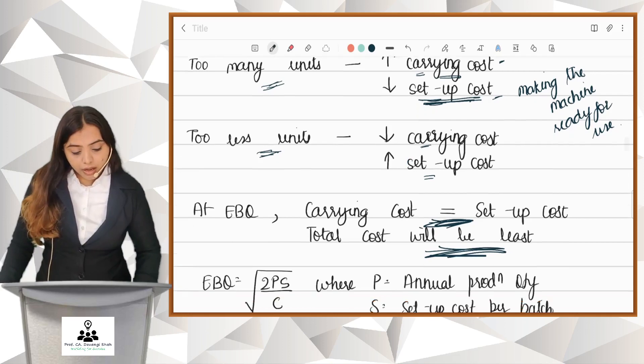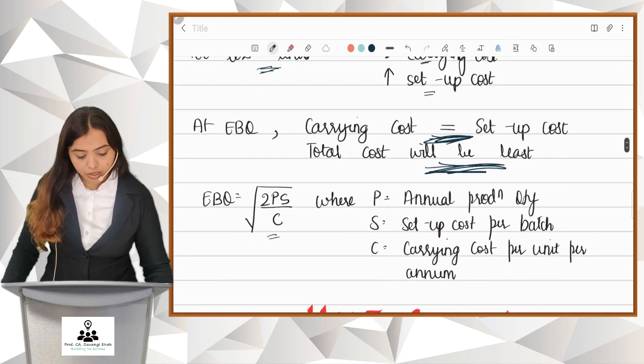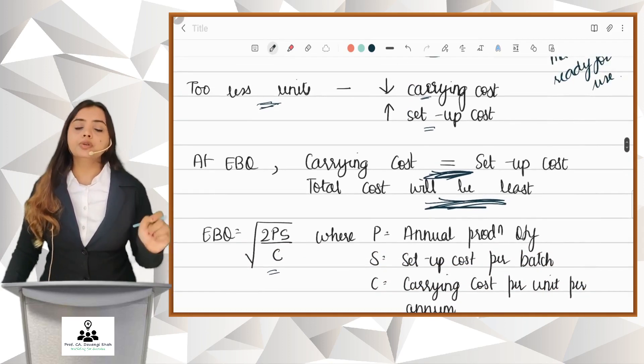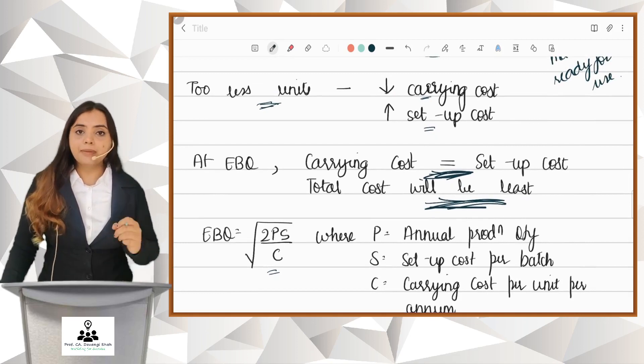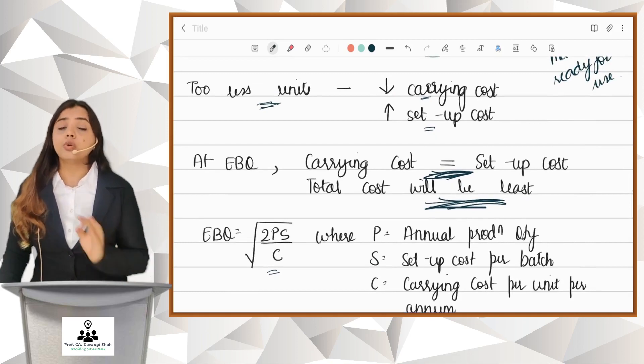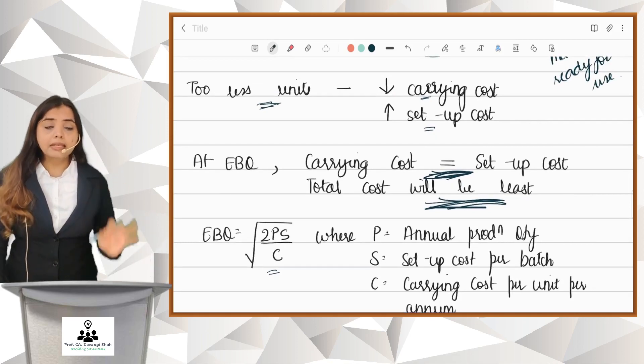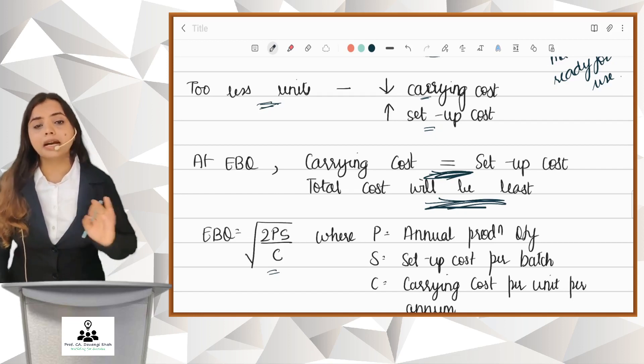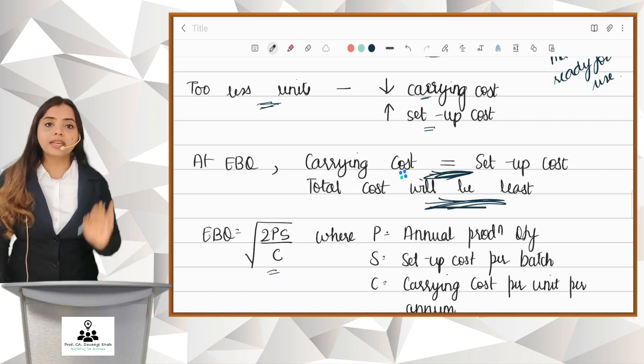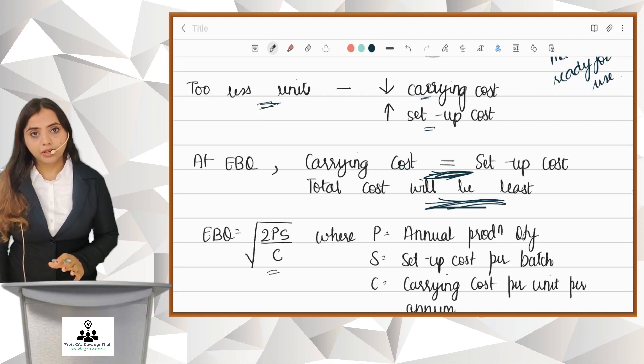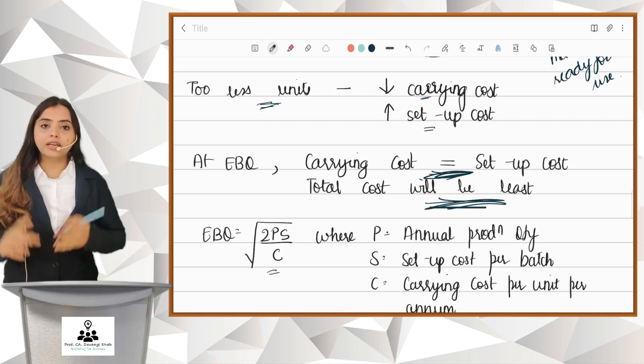Now, how to calculate this Economic Batch Quantity? The formula is under root 2PS upon C, where P stands for annual production quantity, S stands for setup cost per batch, and C stands for carrying cost per unit per annum. Once you get P, S, and C, you get EBQ.